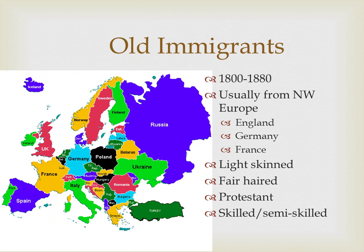If we're talking about new immigrants, that obviously implies there were old immigrants. Who do we mean when we say old immigrants? Old immigrants are those who came over before 1880. The Founding Fathers, the colonists, and the few immigrants before the Civil War were mostly from northwest Europe — England, Germany, France. Around the 1840s we started seeing a little more from Ireland, and a few from China, but overwhelmingly this was northwestern Europe.